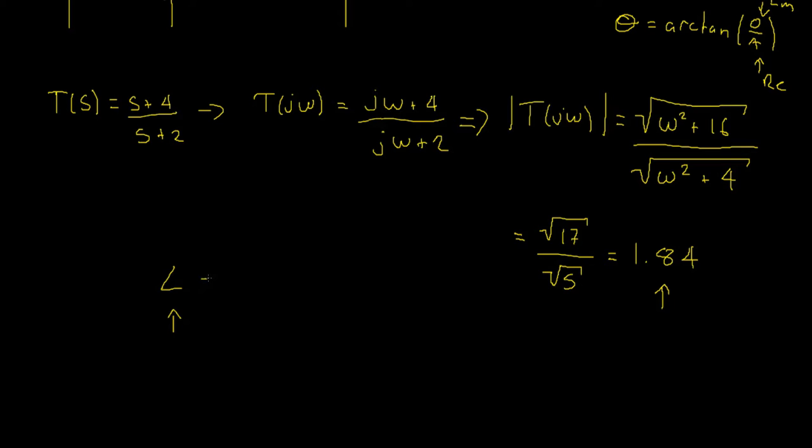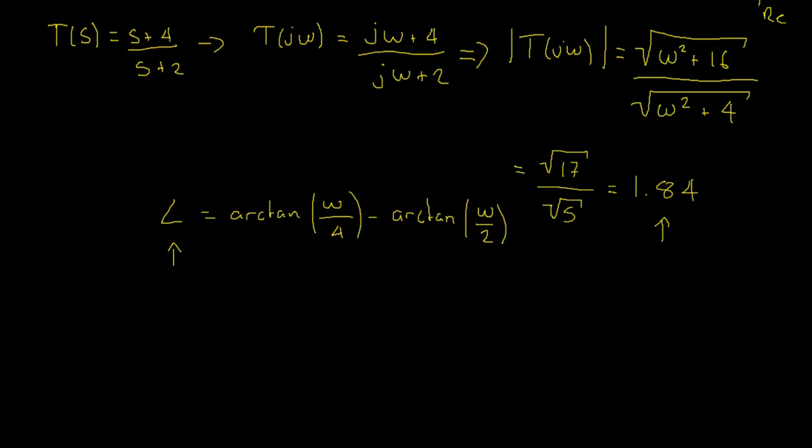The phase, which is often denoted by this symbol, is equal to the arctan of our opposite side, which is our imaginary value, in this case omega, divided by our real component four, subtract the phase of our denominator, which is simply, again, arctan, simply our imaginary component omega divided by our real component two.